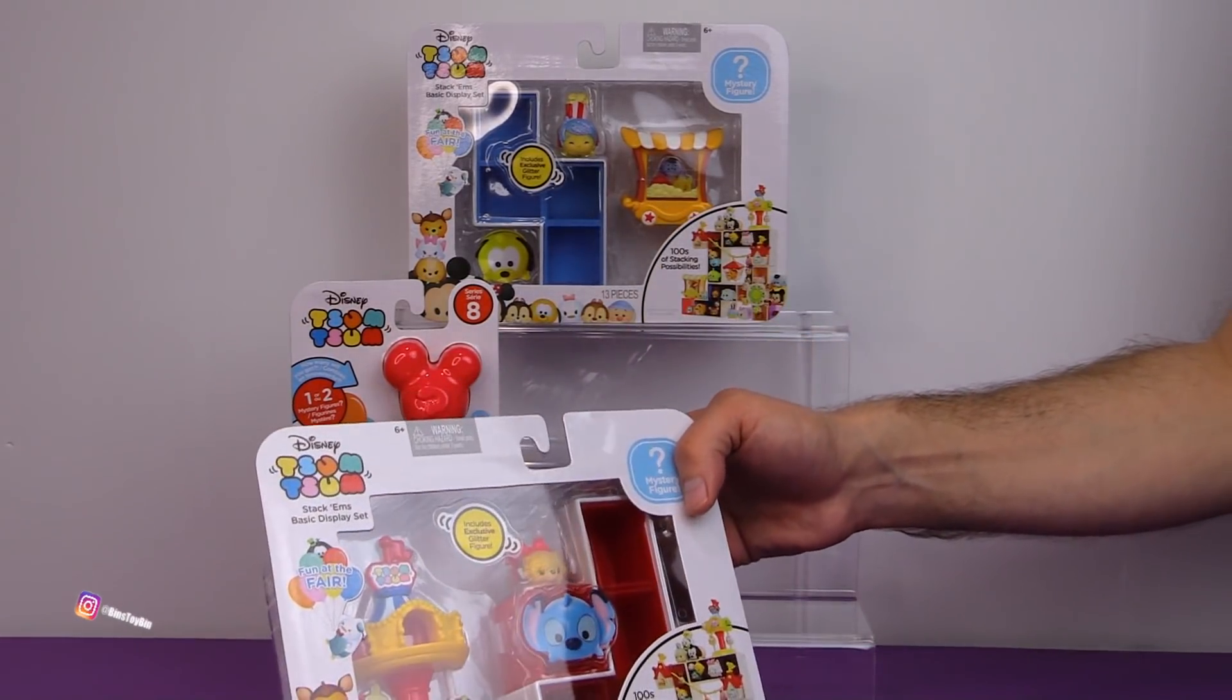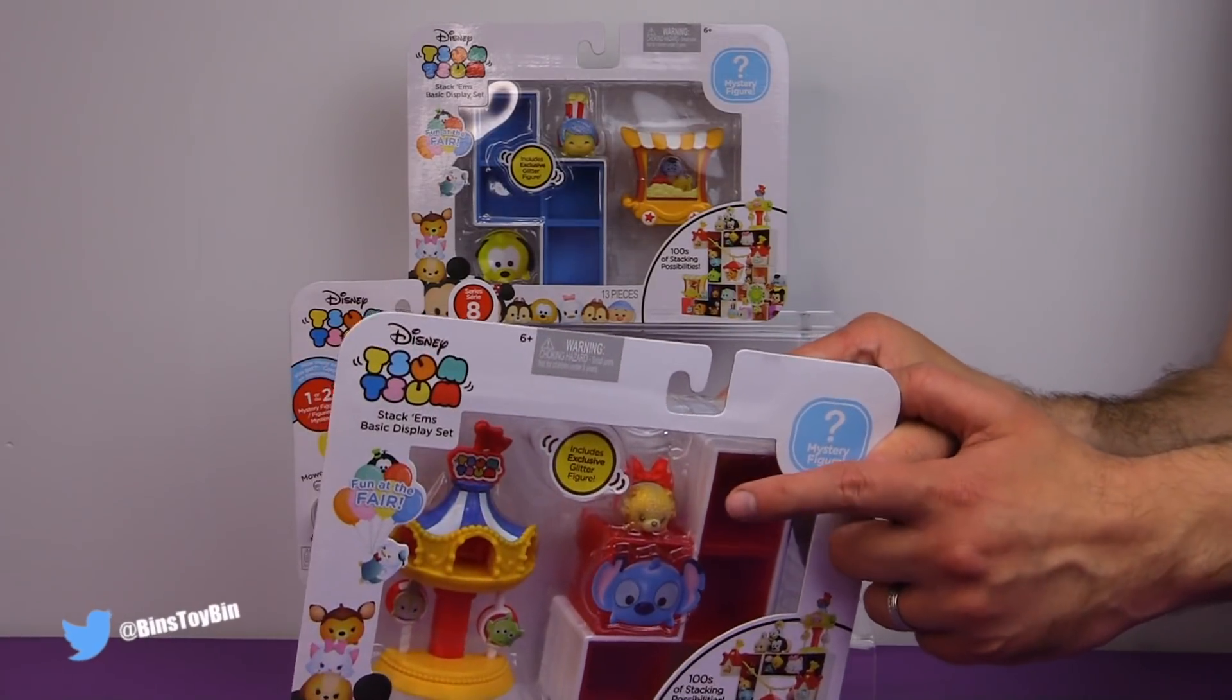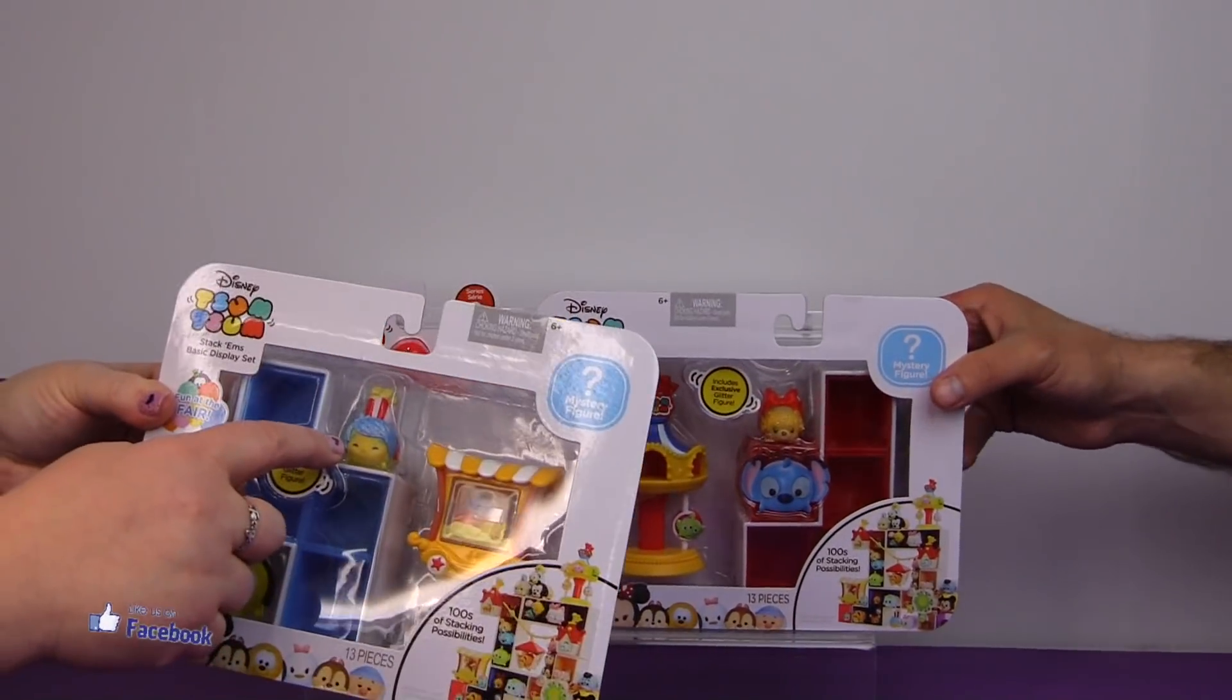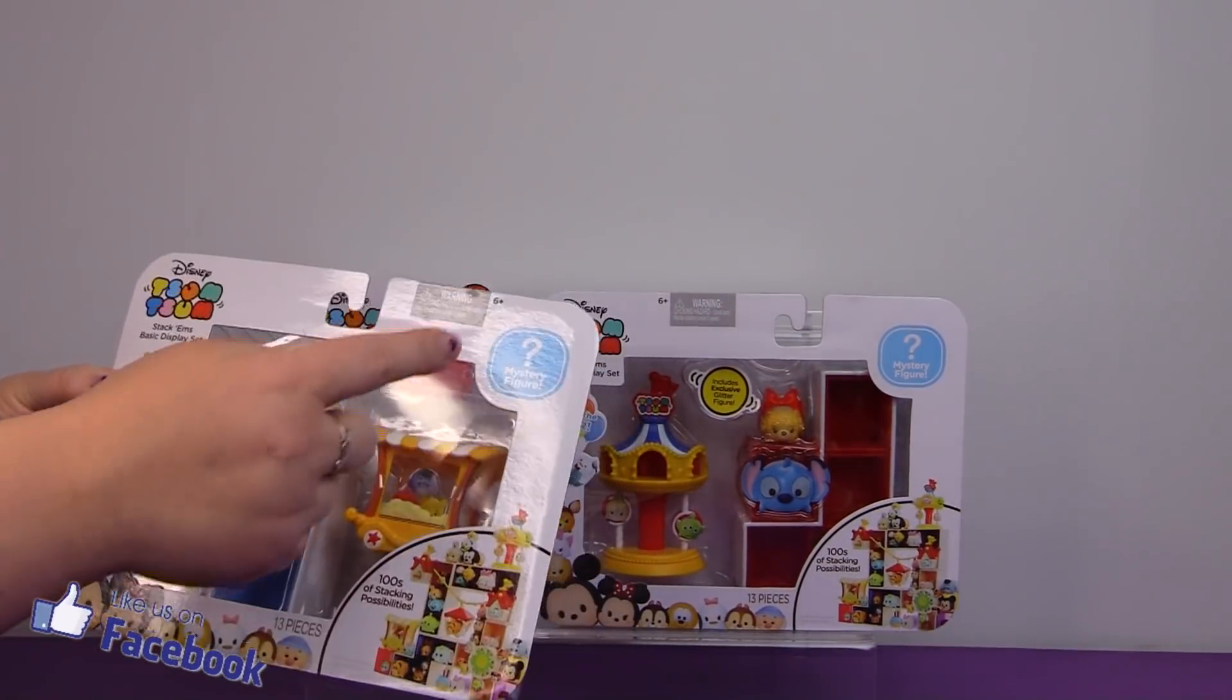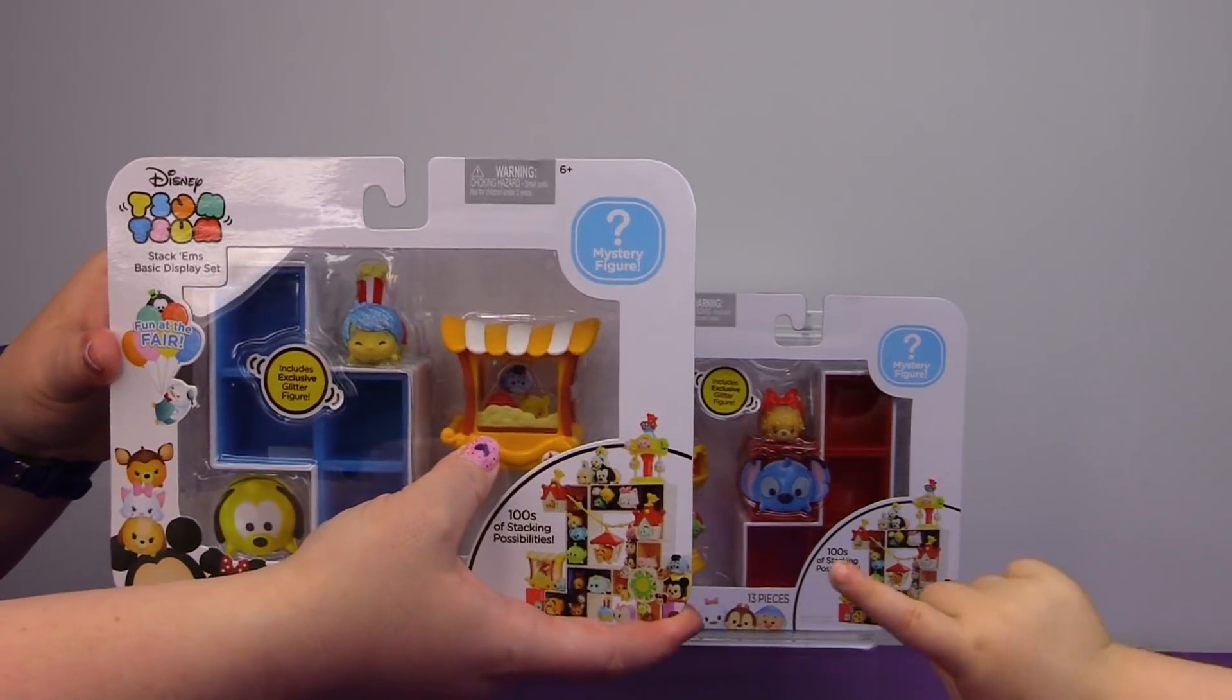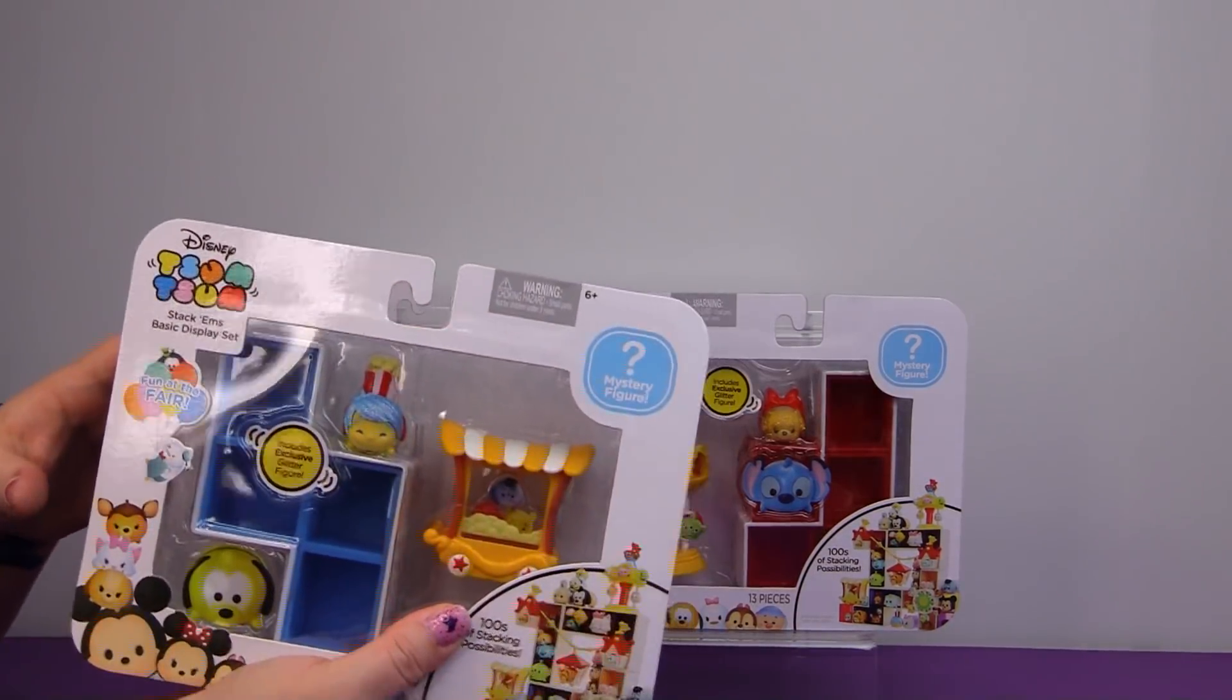And we have two of these fun at the fair stackums basic display sets. It comes with a lady, like a glittery lady from Lady and the Tramp and a mystery character. And this one comes with a sparkly joy and a mystery character. And look at the little popcorn popper. It has Winnie the Pooh and Eeyore in there.